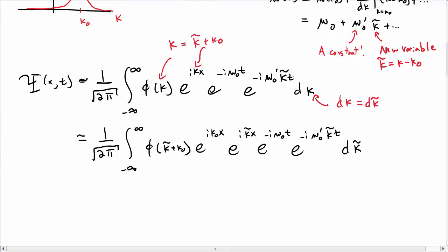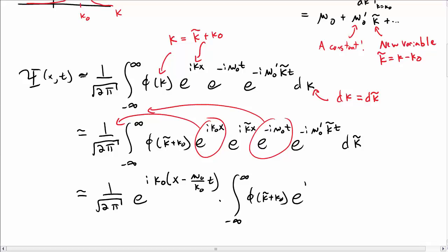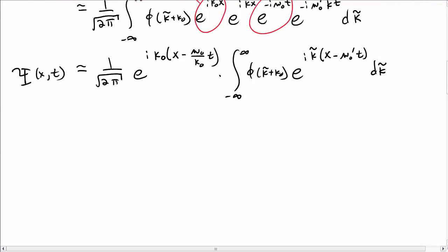Some of these are constants and we can pull them out of the integral, things that don't depend on k-twiddle. So our expression is going to be e^(i k0 x - i omega_0 t) times the integral of phi of k0 plus k-twiddle e^(i k-twiddle (x - omega_0' t)) integrated over k-twiddle. This is capital psi approximately, right? We're making an approximation near k equal to k0.